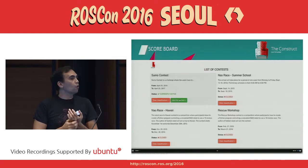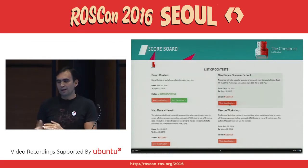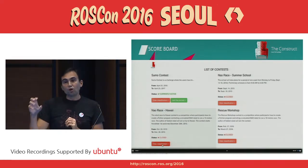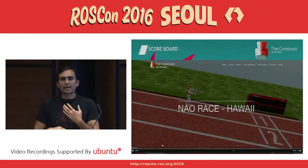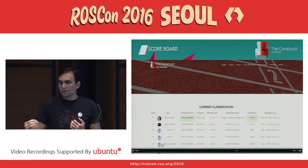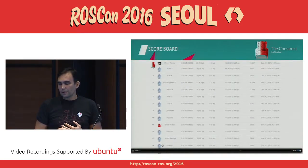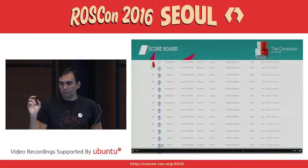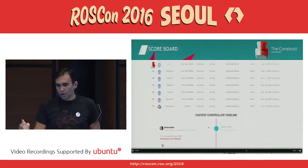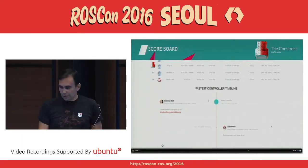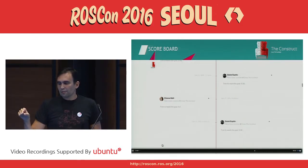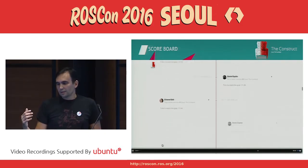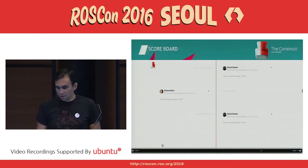There is a general leaderboard for all contests — in this case it will show all the problems in the ontology. You can access any of those and select one to see the status of the different algorithms for a given problem, including for the NAO race, and how rankings change over time and who is taking the leader position.